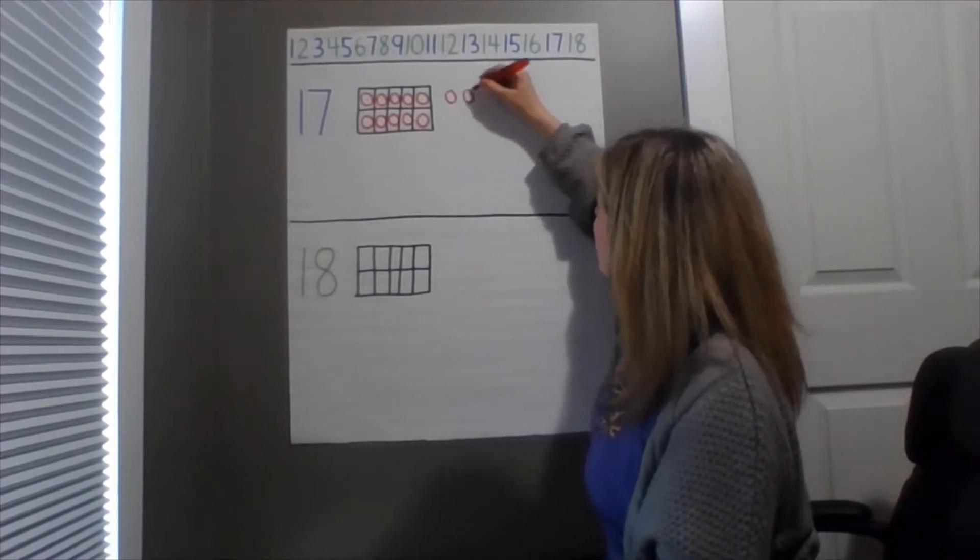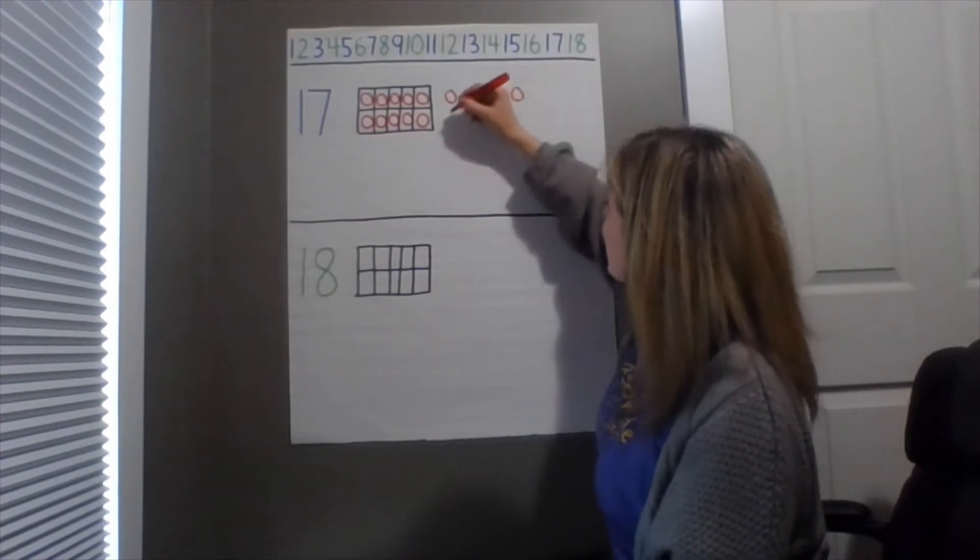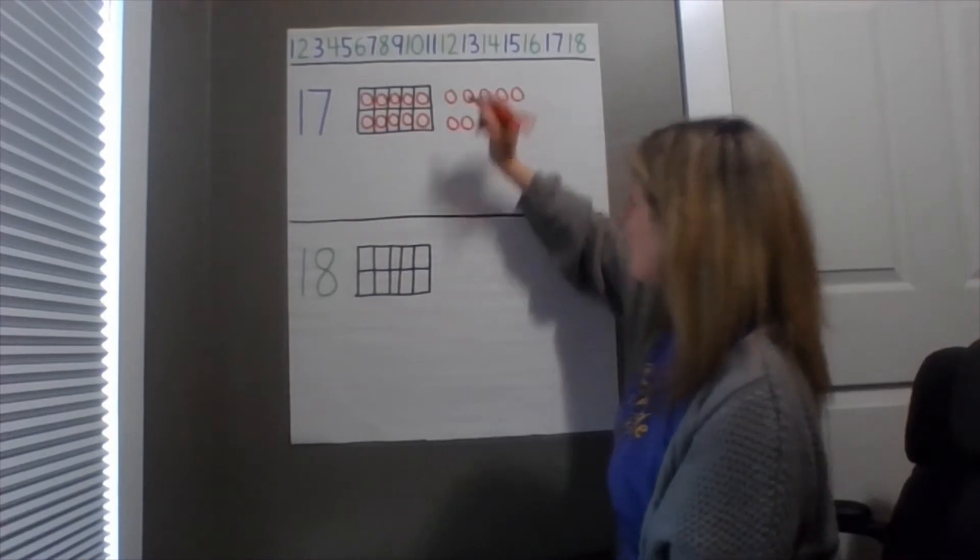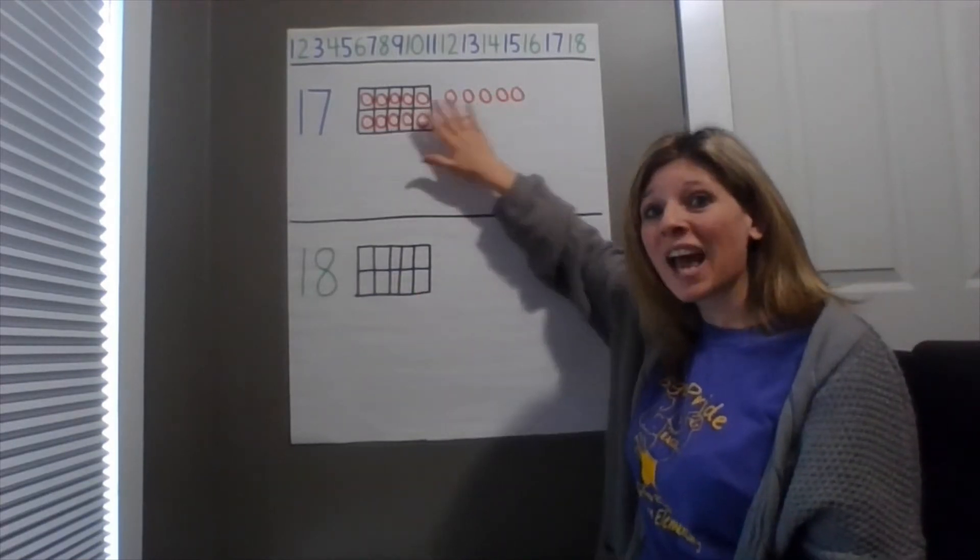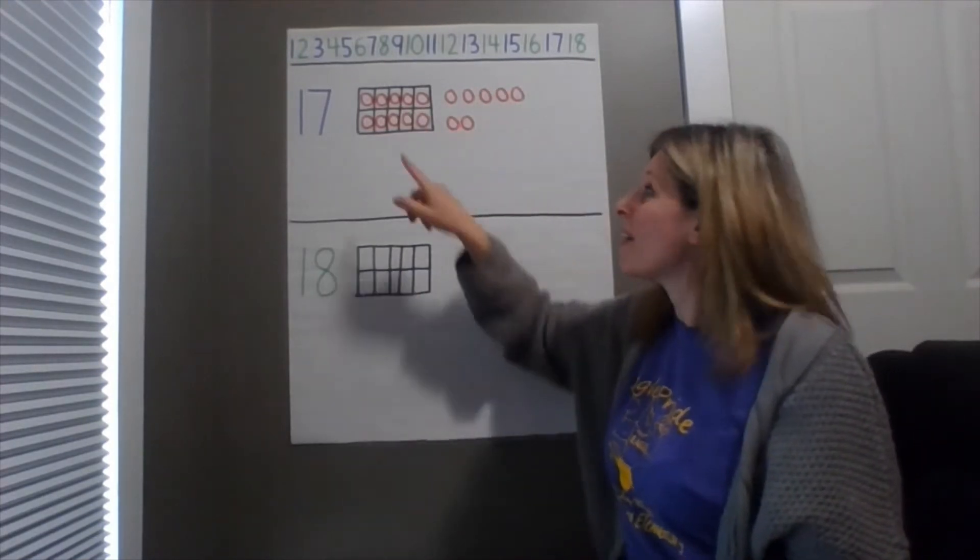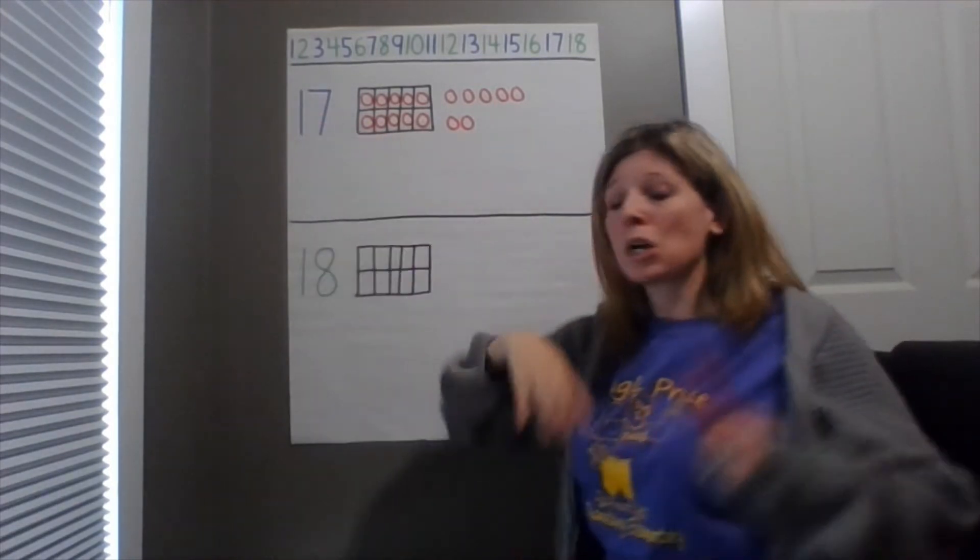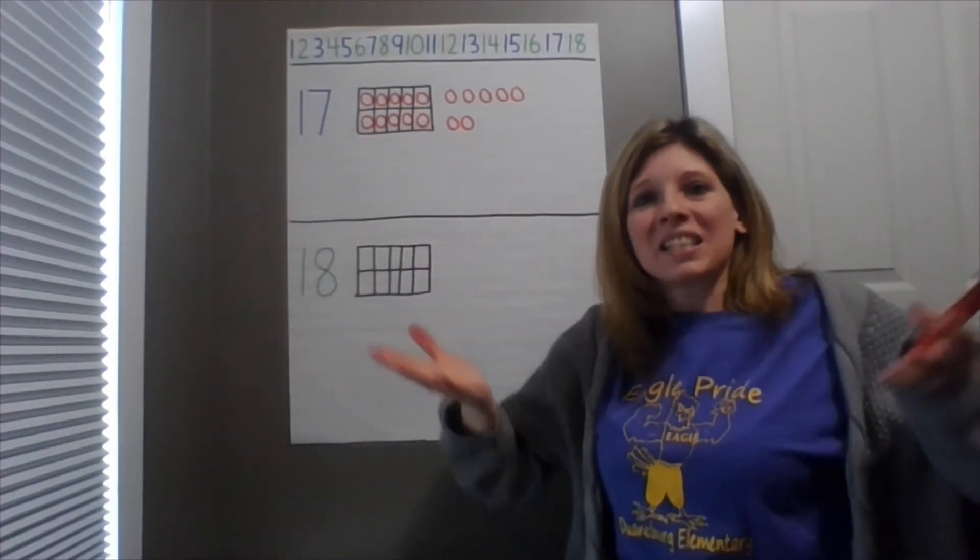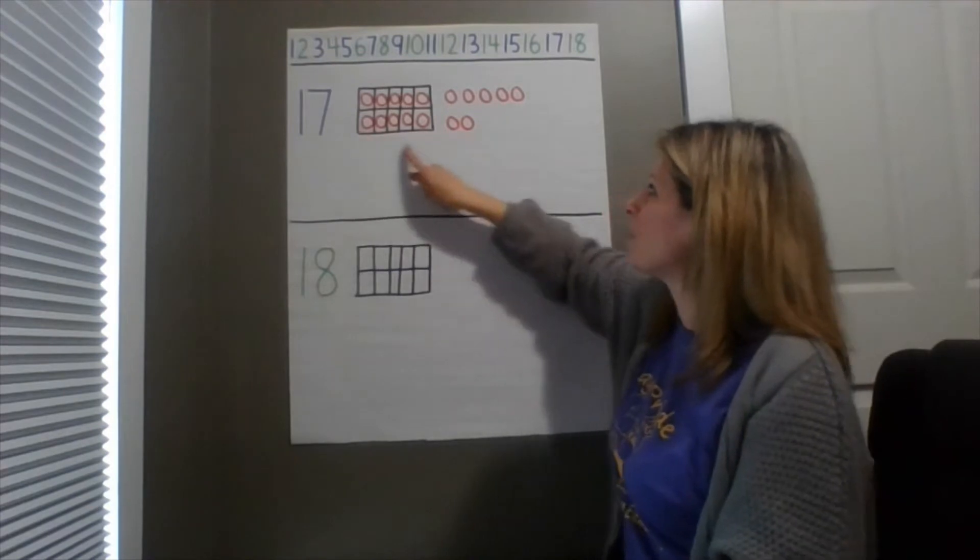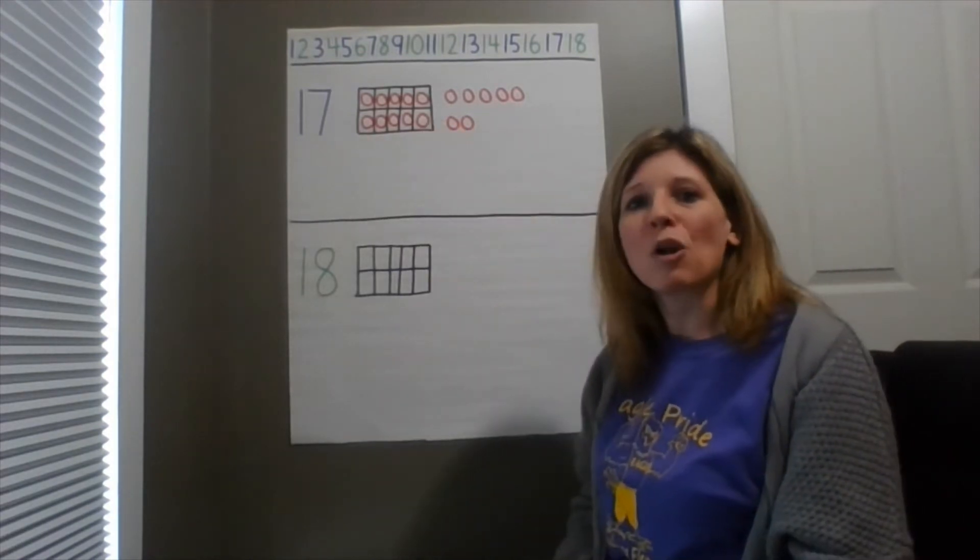1, 2, 3, 4, 5, 6, 7. So I have a group of 10 and 7 more. That makes the number 17. So what is 17? 17 is a group of 10 and 7 more.